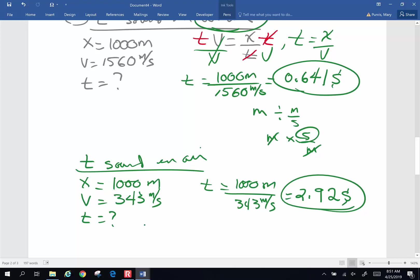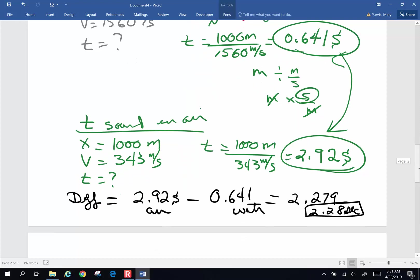But the question is not what these are. The question is, what is the difference in these two sounds? So for difference between the time of the two listeners, 2.92 seconds for air minus 0.641 seconds for water. And I get 2.92 minus 0.641. And I end up with 2.279. Let's round it off to 2.28 seconds. That's going to be the difference in time between the two listeners.